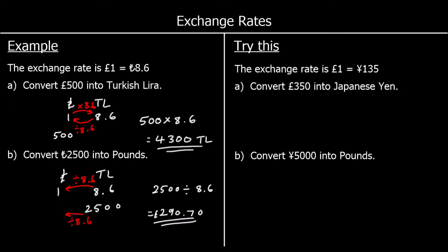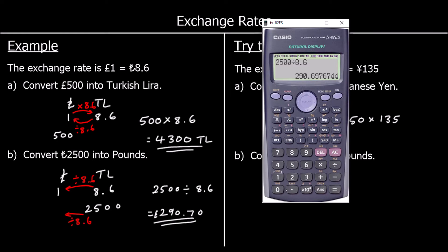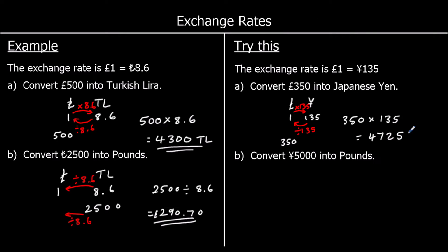This time we have pounds and Japanese yen. The exchange rate is one pound is equal to 135 yen. To go from pounds to yen, we're going to times by 135; to go from yen back to pounds it will be divided by 135. We want to change 350 pounds into yen, so from pounds to yen we are timesing by 135. 350 times 135 is 47,250 yen.